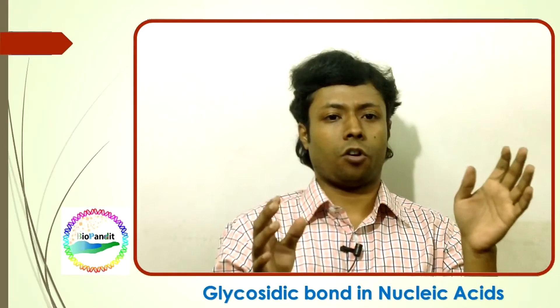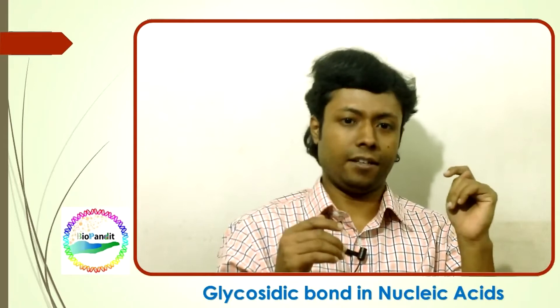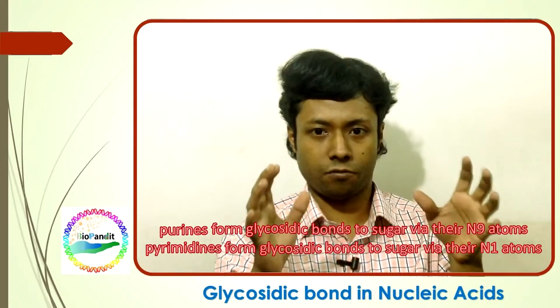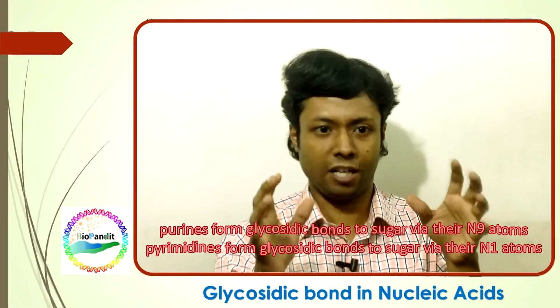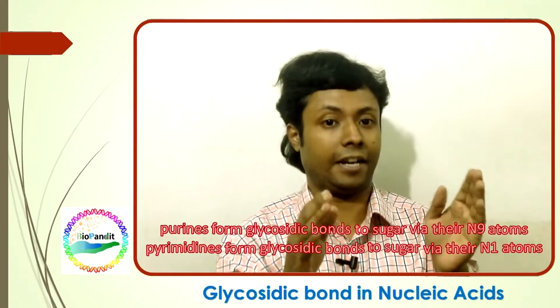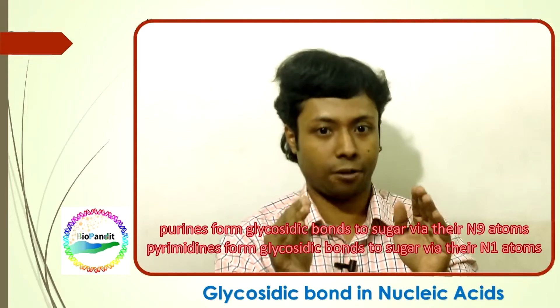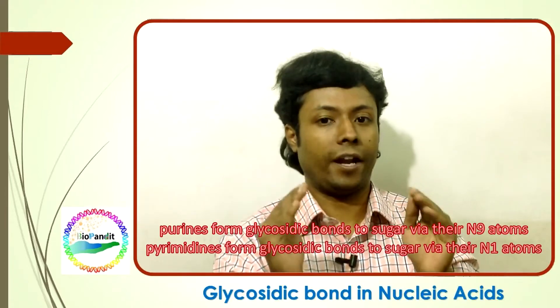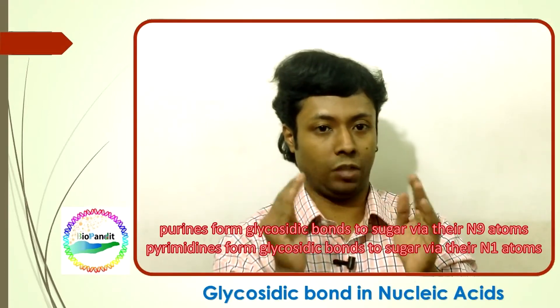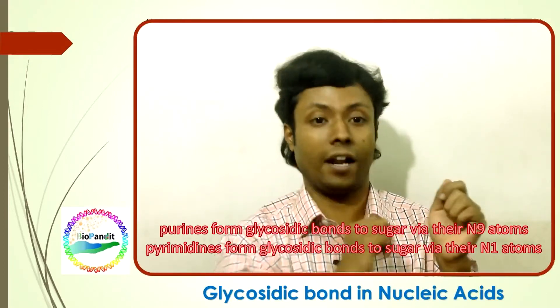For nucleic acids, the purines form glycosidic bonds to sugar via their N9 atoms, whereas pyrimidines do so through their N1 atoms.